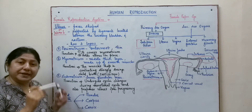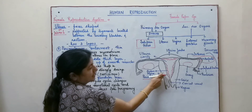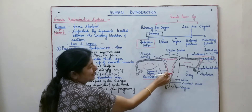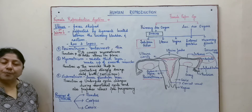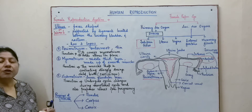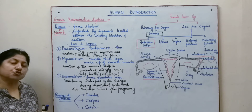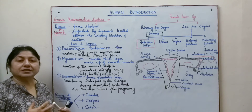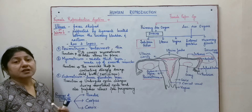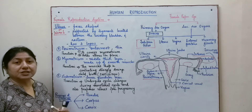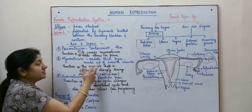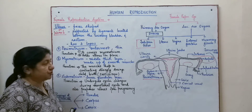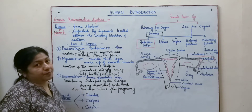The myometrium is the middle layer. As you can see here, this thick inner layer is made up of smooth muscle cells. These smooth muscle cells have a very important role during the process of parturition — that is, during childbirth, these muscles contract strongly, pushing the baby outside. So the myometrium muscles help by contracting strongly during the parturition process.